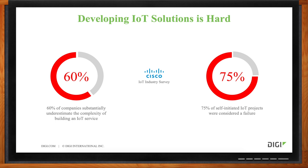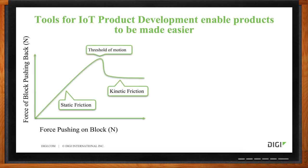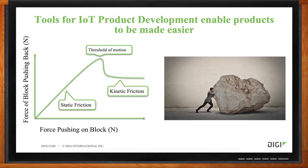I liken it to a physics plot about pushing a static object on the ground against frictional force. This is really analogous to developing an IoT product — initially you have to exert tons of force in the static friction area. You have to exert more force to get the object in motion before it actually moves. But once it's in motion, you can exert less force. It takes a lot up front to get the product launched, but once it's in motion, it's going places.